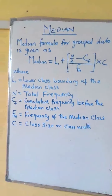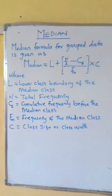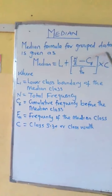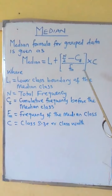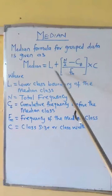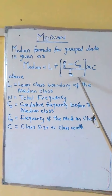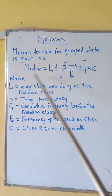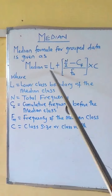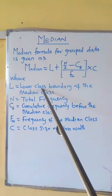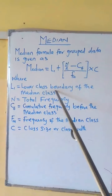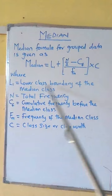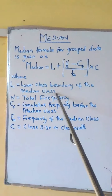Now let us look at median for grouped data. The formula is what we have on the board, where L1 stands as the lower class boundary of the median class.